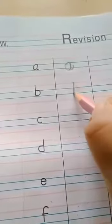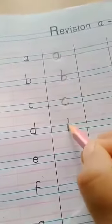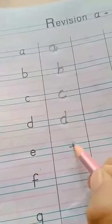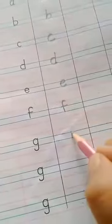So let's start from A. A, B, C, D, E, F, G, G, G. Okay.